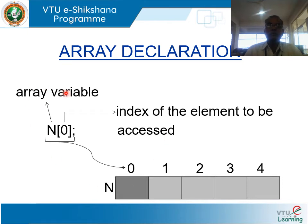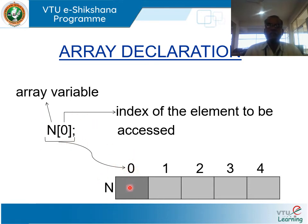This shows how to access elements in an array. For example, n[0], where n is the array variable and 0 is the index of the element to be accessed. This accesses the first element in the array n.